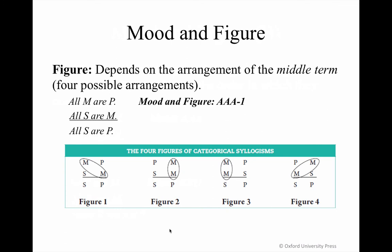The letters S and P always reflect the minor and major terms respectively. The minor term is the subject of the conclusion. In figures one and two, the minor term is also in the subject position of the minor premise, but in figures three and four, the minor term is in the predicate position of the minor premise.